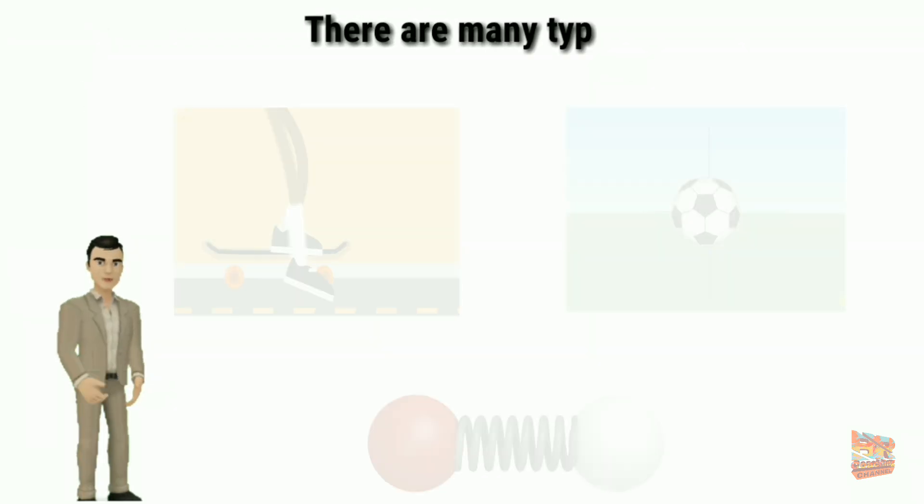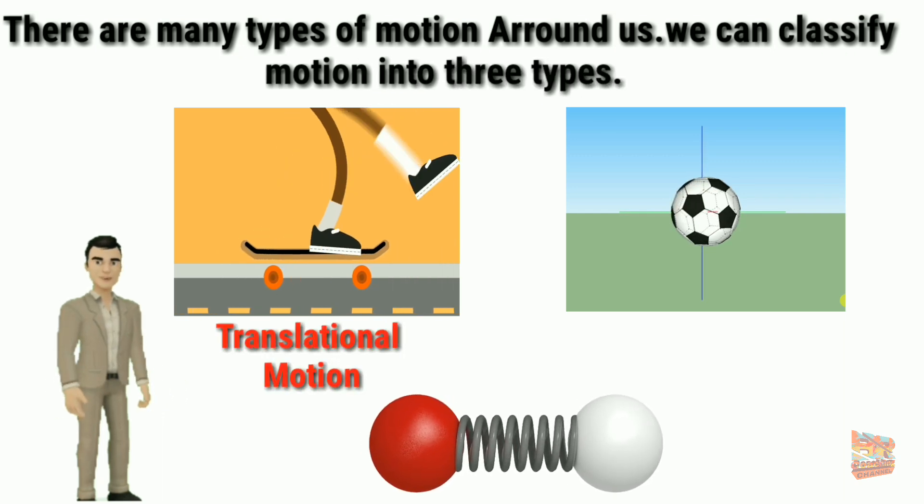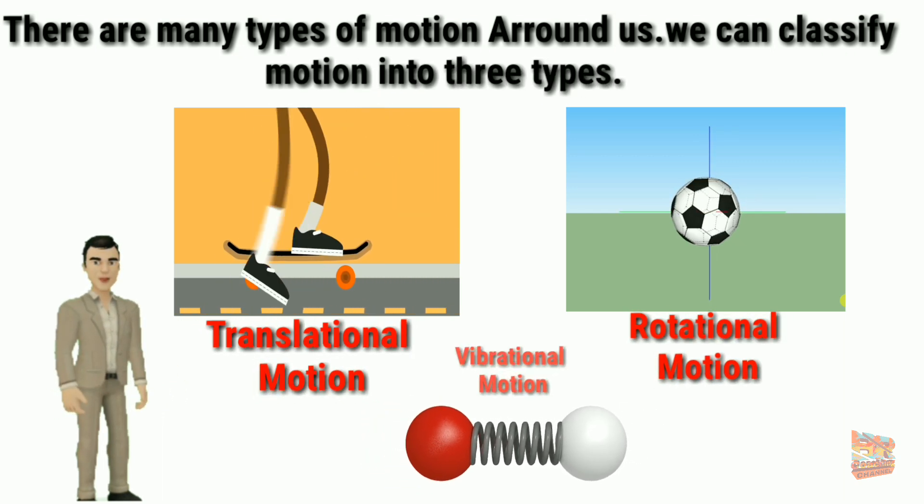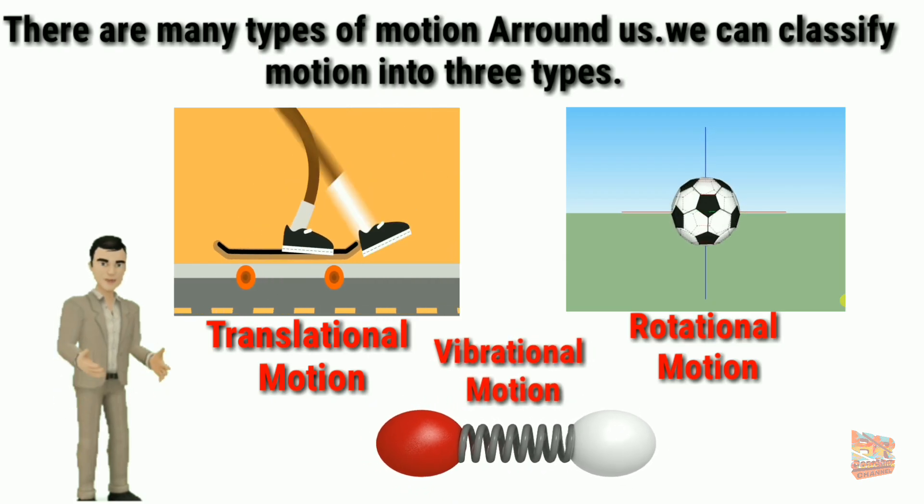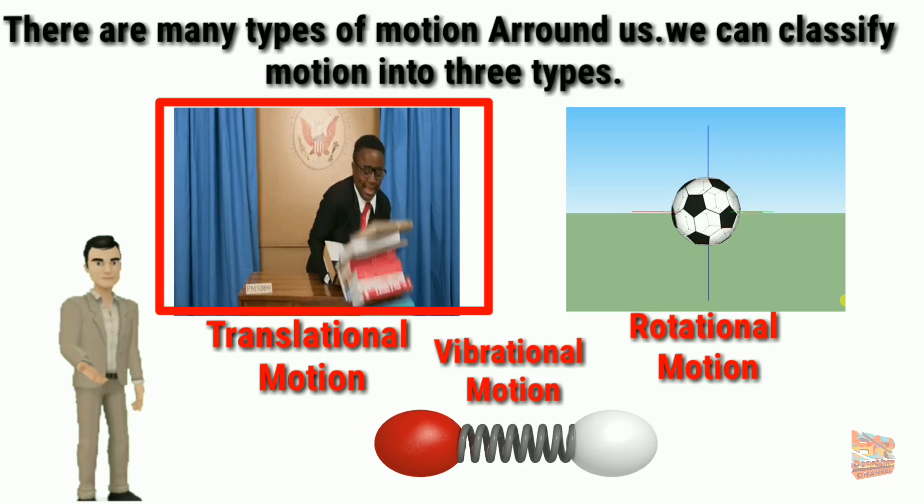There are many types of motion around us. We can classify motion into three types: the translational motion, rotational motion, and vibrational motion. But in this video we learn only translational motion in detail. So let's get started.